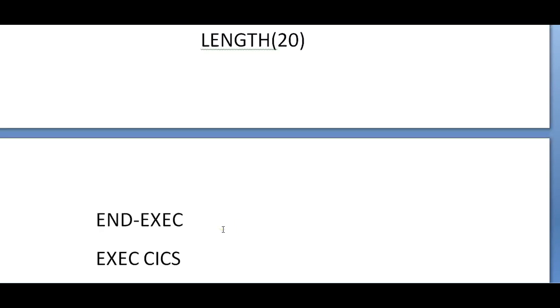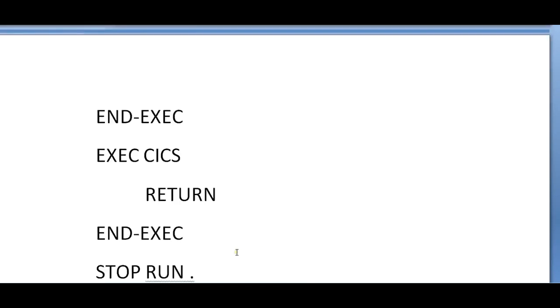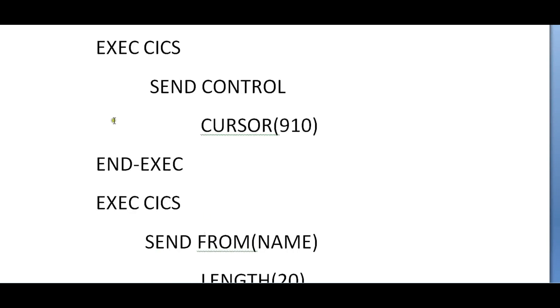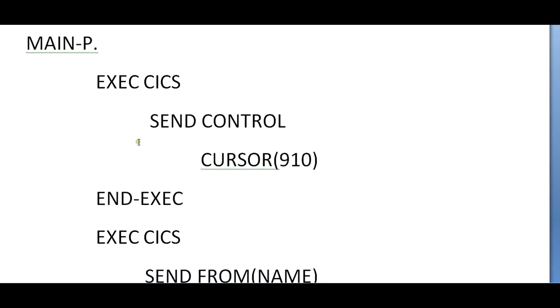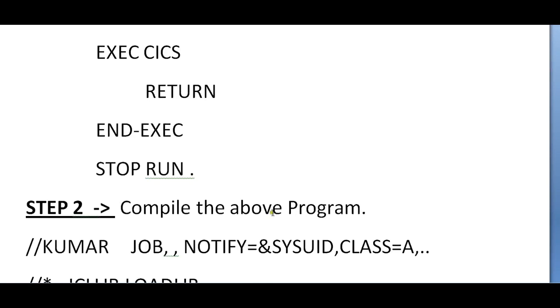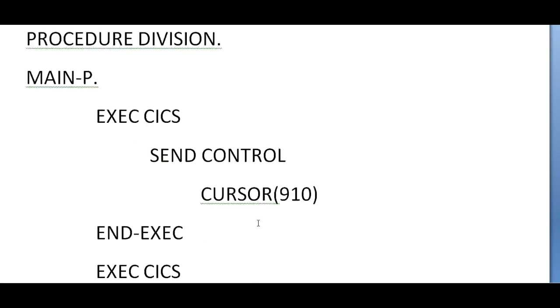After sending the message to the screen, you need to return back. The program occupies some resources, and in order to release those resources you must place a RETURN command. Mainframe resources are costly so we need to be very cautious about resource handling. So we coded three commands: EXEC CICS SEND CONTROL to set cursor position, EXEC CICS SEND to send the message, and EXEC CICS RETURN to return back. That is how we code a simple COBOL-CICS program for sending a message onto the online screen.